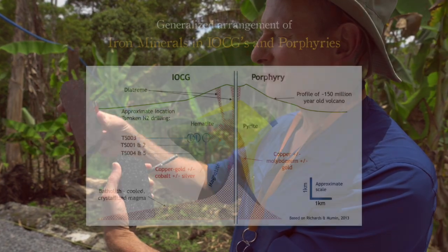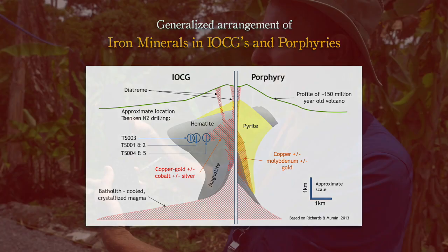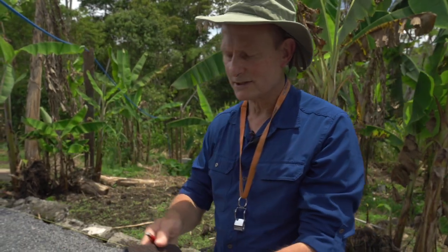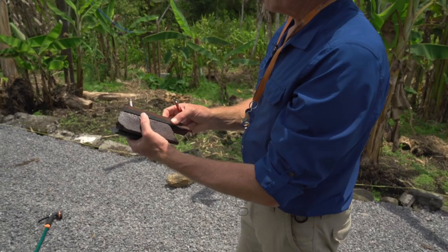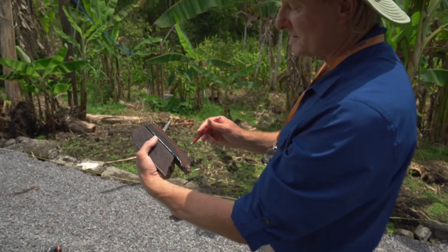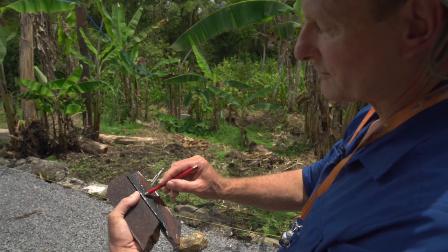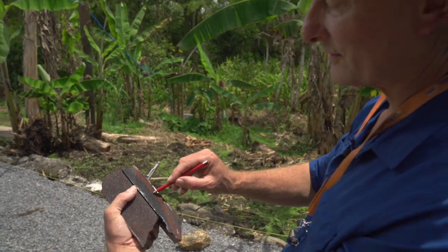Generally the magnetite-rich rock forms at a deeper level than the hematite-rich rock, so the hematite would form a sort of halo — on a big scale, maybe a kilometer or two across. The hematite would generally be above this rock, but typical of iron oxide copper gold systems, very often these minerals are overprinted. Here you can see the hematite flooding in and just replacing what was originally a magnetite-rich rock.